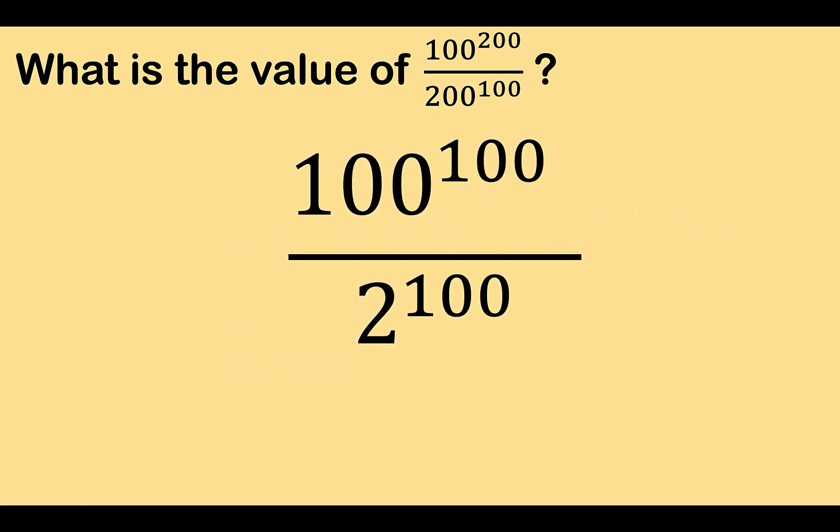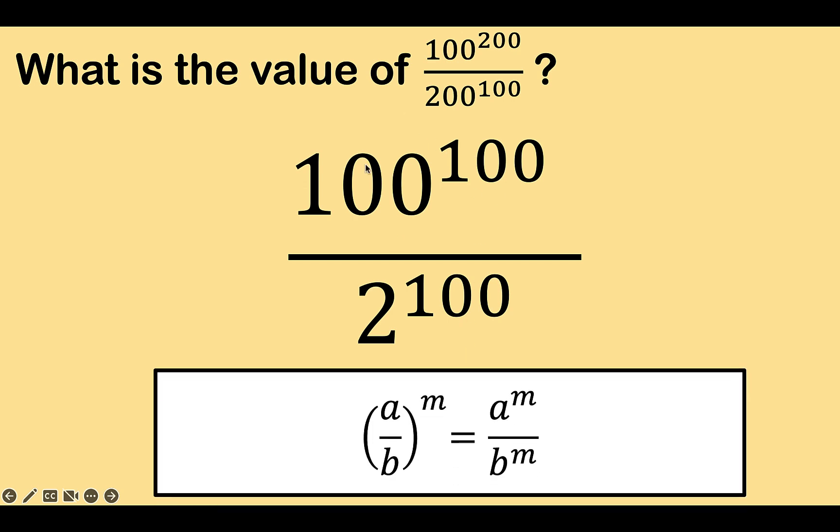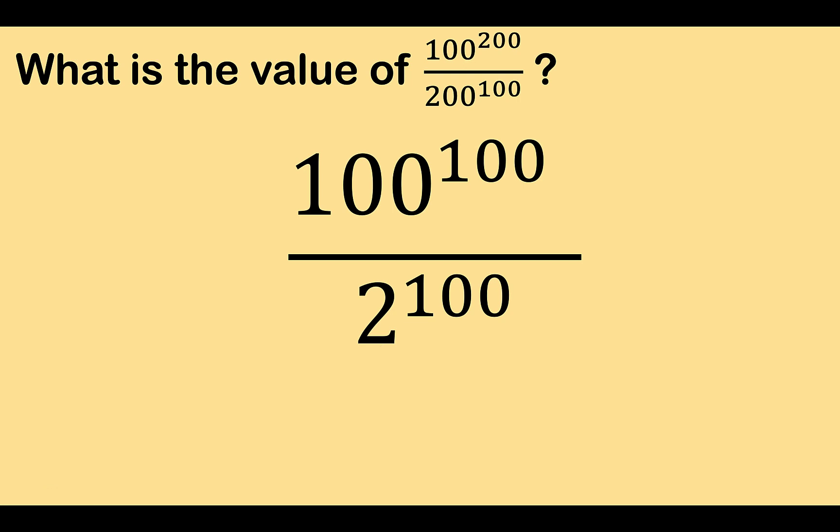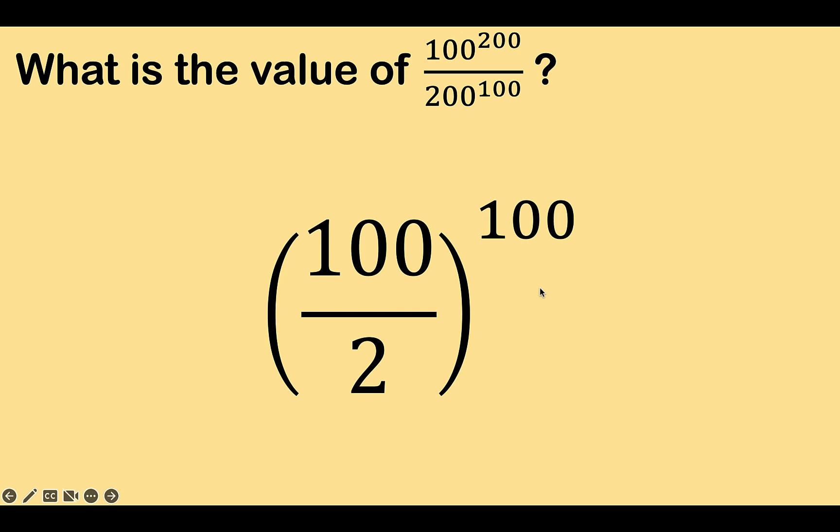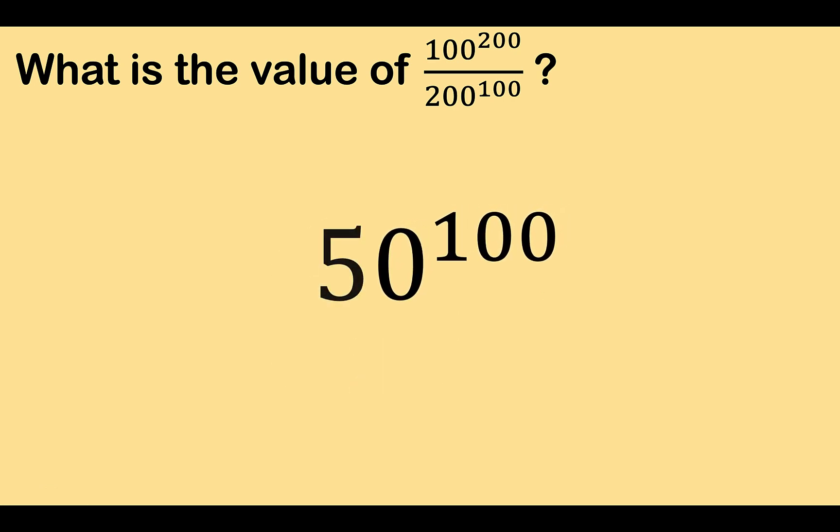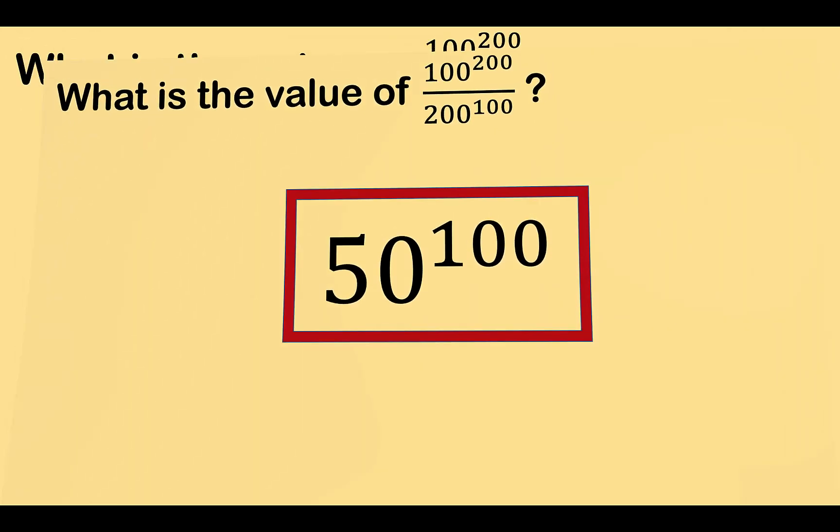Now at this point, notice that we have a common exponent 100, and so we can apply this property. We have two different bases but the exponents are the same. We can write this as one fraction, a over b, all raised to the common exponent. So we now have 100 over 2 raised to the common exponent 100, which is equal to 50 raised to 100. And this is now our final answer.